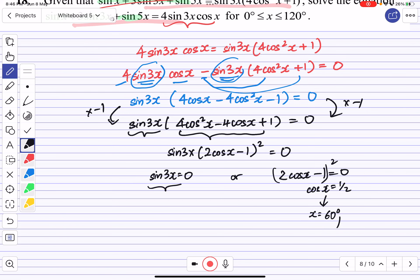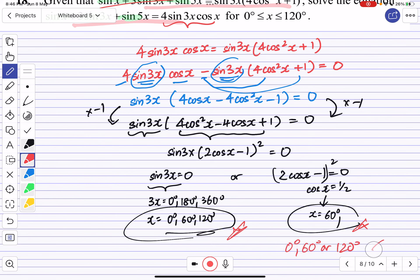For sin 3x = 0, we have 3x = 0°, 180°, or 360°. So x would be 0°, 60°, or 120°. Combining these two, I have my final answers: 0°, 60°, or 120°, and we are done.